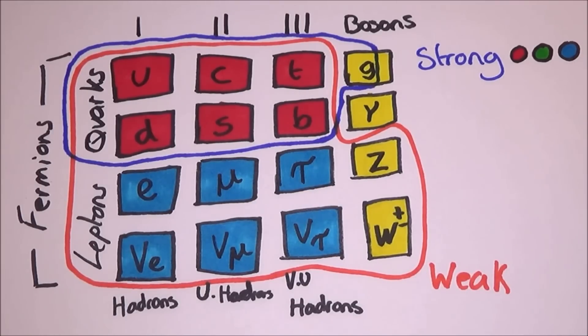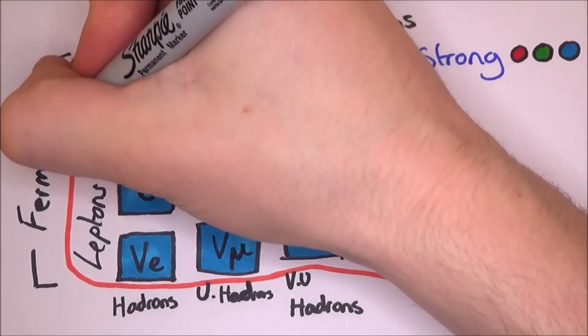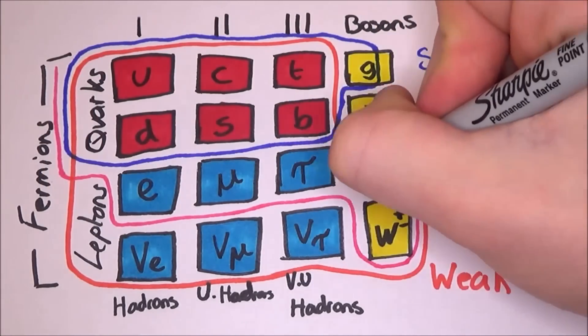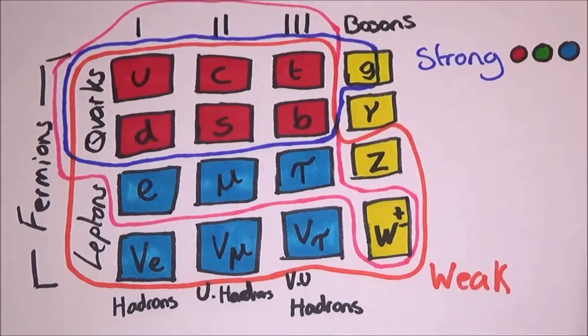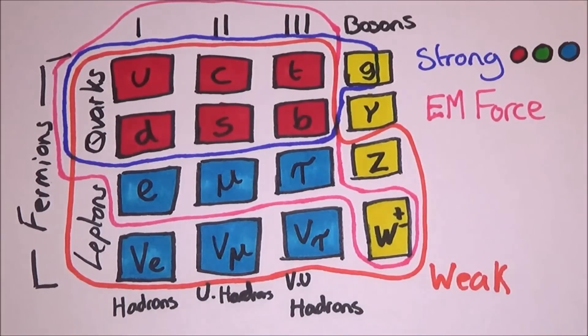All the quarks, the electron, the muon and the tau and the w bosons are all affected by the electromagnetic force which is caused by photons. Up, charm and top all have a charge of plus two thirds.